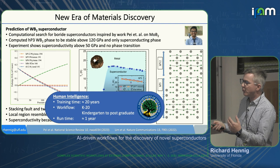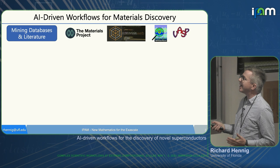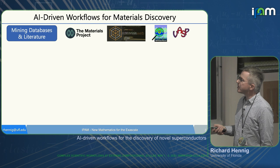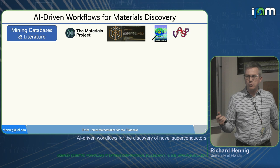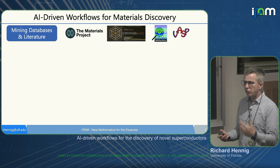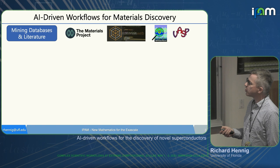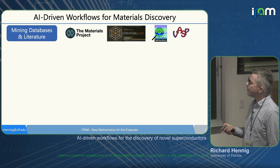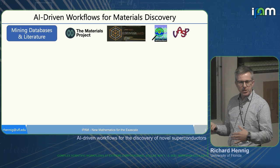Together with Jason, I'll tell you about our AI-driven workflow for materials discovery, especially for superconductivity. We always start with mining databases and the literature to identify interesting areas in material space. We often start with the Materials Project, in addition to reading papers. We have our own databases, MaterialsWeb, and workflows including MP interfaces, using VASP for initial screening. That gives us candidate material systems — in this case, we're looking at boride systems, elemental and binary, ternary, quaternary.